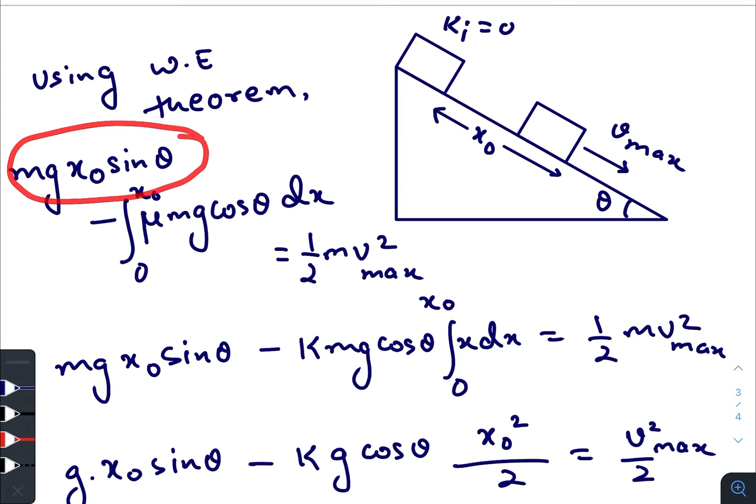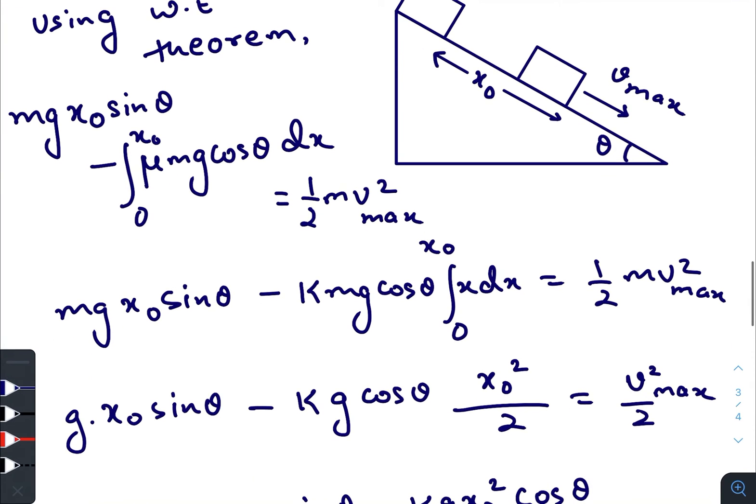If this is x₀ the vertical height is x₀ sin theta. Work done by the gravity, work done by the friction μ mg cos theta dx. We'll later put μ equals to kx, equals to final kinetic energy minus initial kinetic energy.